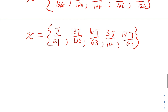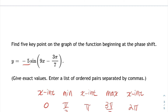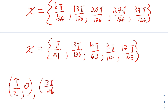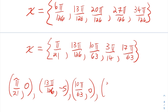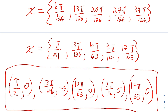Now we just need to create the key points: x-intercept, minimum, x-intercept, maximum, and then another x-intercept. The minimums are negative 5 and the maximums are positive 5. So the 5 key points are: x-intercept at (pi/21, 0), minimum at (13pi/126, -5), x-intercept at (10pi/63, 0), maximum at (3pi/14, 5), and the last x-intercept at (17pi/63, 0). Those are the 5 key points for this sine function.